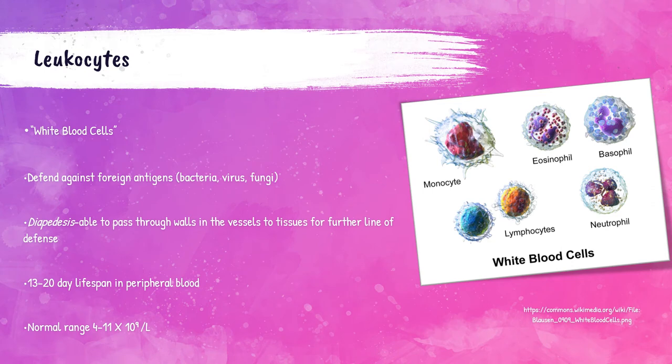White blood cells, or leukocytes, are part of the body's immune system and are responsible for defending against foreign antigens like viruses and bacteria. They have the ability to do something called diapedesis, where the white blood cells move out of the circulatory system and towards the site of tissue damage or infection. They live around 13 to 20 days in the peripheral bloodstream.